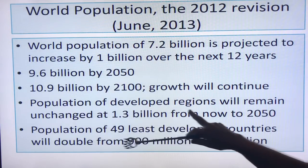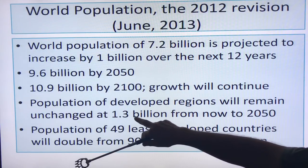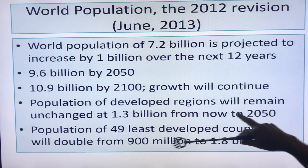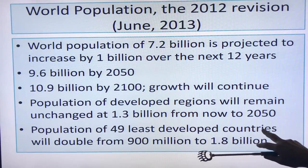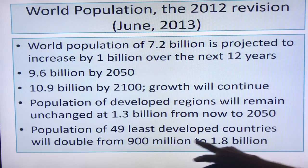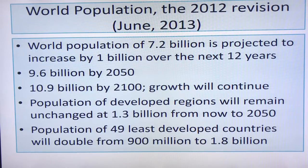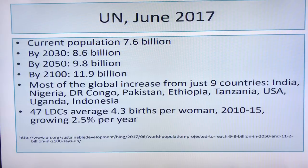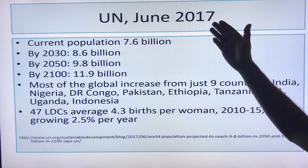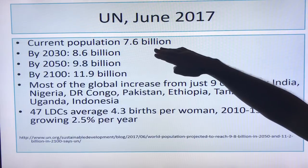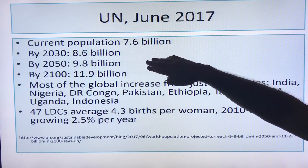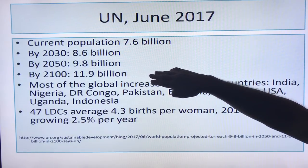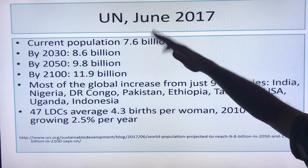The population of developed regions will remain largely unchanged at about 1.3 billion from now to 2050. But the population of the 49 least developed countries will double from 900 million to 1.8 billion. According to UN numbers from June 2017, world population is 7.6 billion; by 2030 it'll be 8.6 billion, by 2050 it'll be 9.8 billion, and by 2100 it'll reach 11.9 billion. It's still growing.